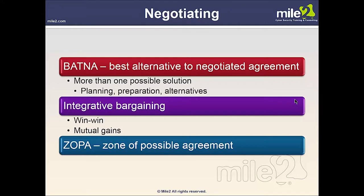ZOPA — Zone of Possible Agreement, also called the bargaining range — exists if there's a potential agreement that would benefit both sides more than their alternatives. For example, if Bob wants to buy an item for $5,000 or less and Sue wants to sell for $4,500, those two have a ZOPA. But if one will not go below a certain price and the other will not go above it, there's no Zone of Possible Agreement. Finding the ZOPA can be challenging but is critical to the success of negotiation.